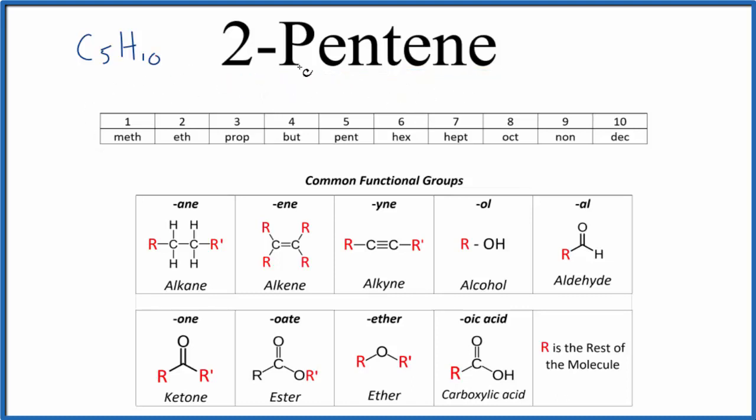So when we look at 2-pentene, the ene tells us that we're going to have a double bond between two of the carbon atoms. Pent tells us that we'll have overall five carbon atoms in the chain, and the 2 tells us where that double bond is going to be at.